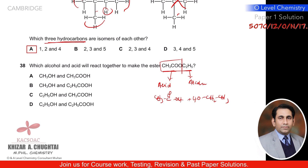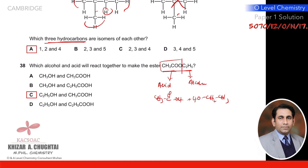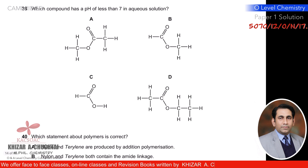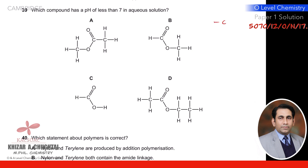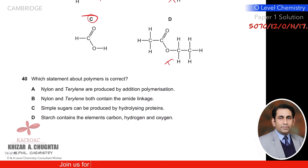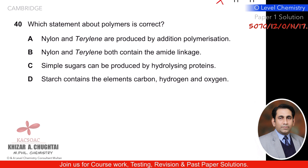Question thirty-nine: which compound has a pH of less than 7 in aqueous solution? It must be acidic — it must contain a carboxyl group (–COOH). There is no –COOH in the other options; the one and only option A contains that group, making pH less than 7. So A is the correct option.